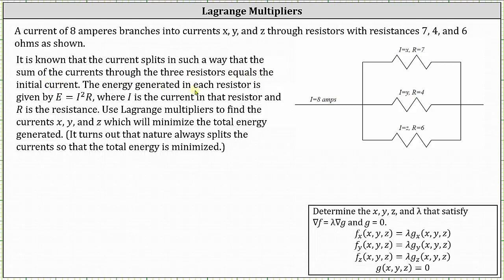The energy generated in each resistor is given by E equals I squared times R, where I is the current in that resistor and R is the resistance. We're asked to use Lagrange multipliers to find the currents x, y, and z which will minimize the total energy generated. It turns out that nature always splits the currents so that the total energy is minimized. We can use the equation E equals I squared times R to help us determine the function we're trying to minimize, which will be the function f of x, y, z in our notes for Lagrange multipliers.